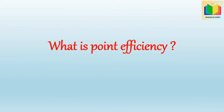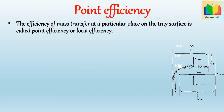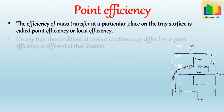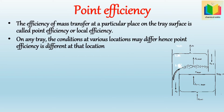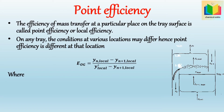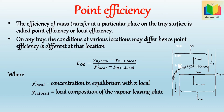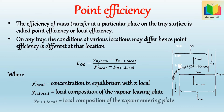What is point efficiency? The efficiency of mass transfer at a particular place on the tray surface is called point efficiency or local efficiency. On any tray, the conditions at various locations may differ; hence point efficiency is different at each location. It is expressed as: Aog = (y_n,local − y_{n+1},local) / (y*_local − y_{n+1},local), where y*_local is the concentration in equilibrium with x_local, y_n,local is the local composition of the vapor leaving the plate, and y_{n+1},local is the local composition of the vapor entering the plate.